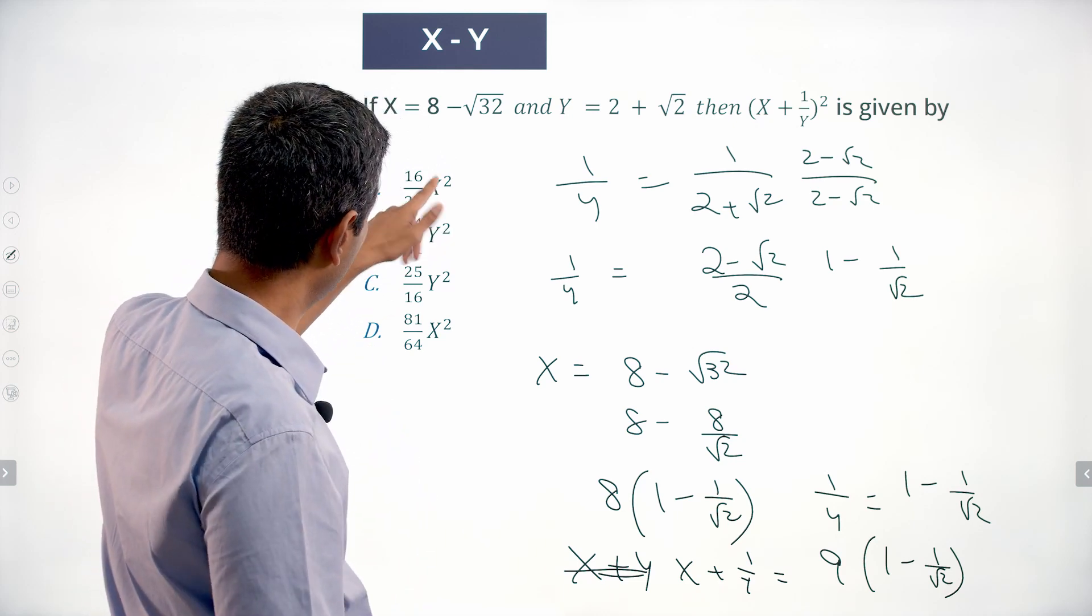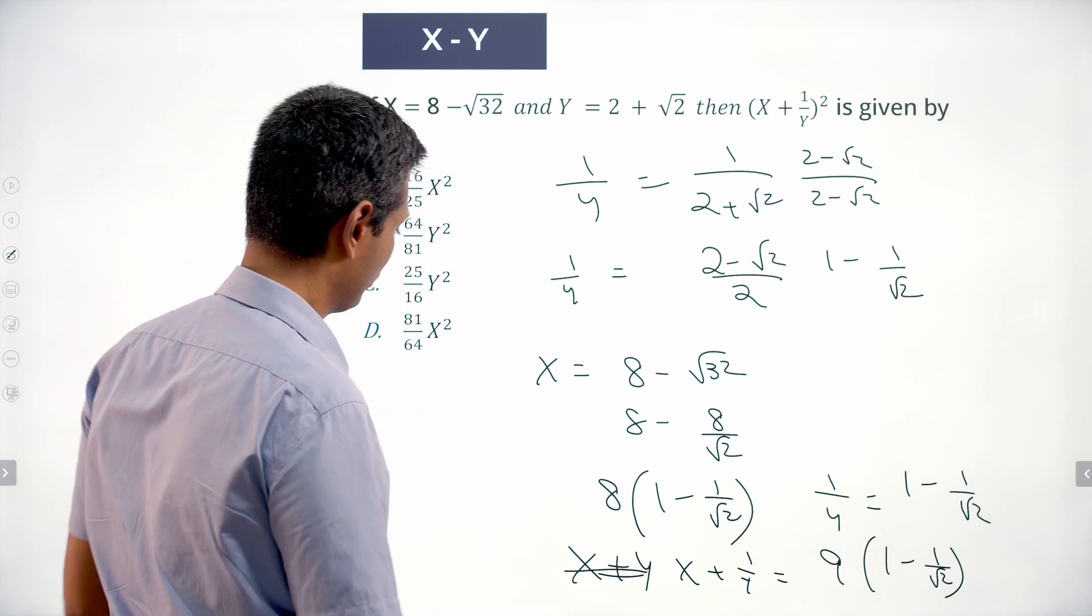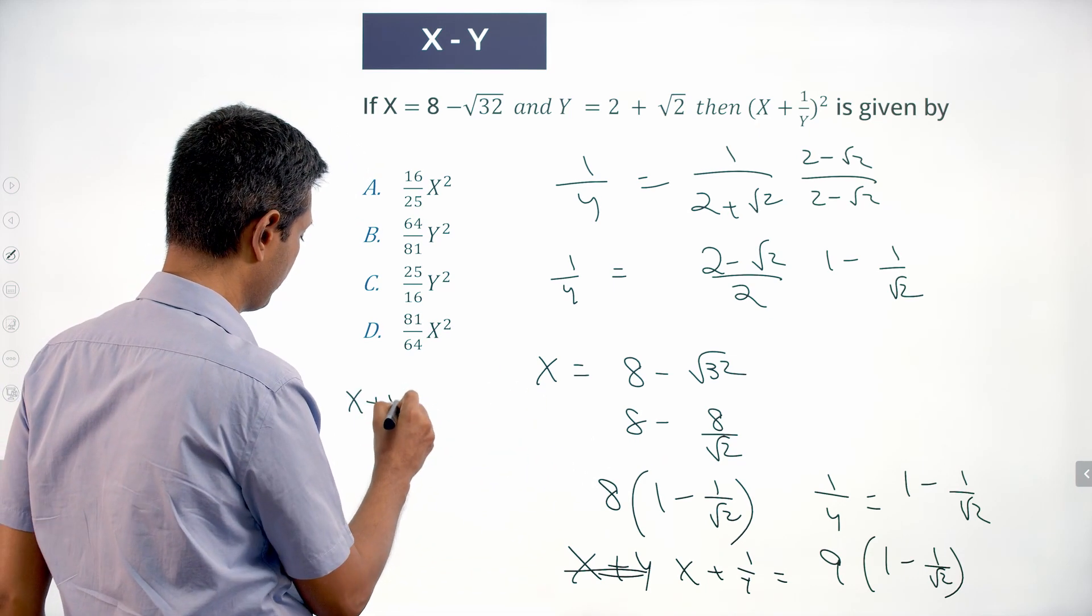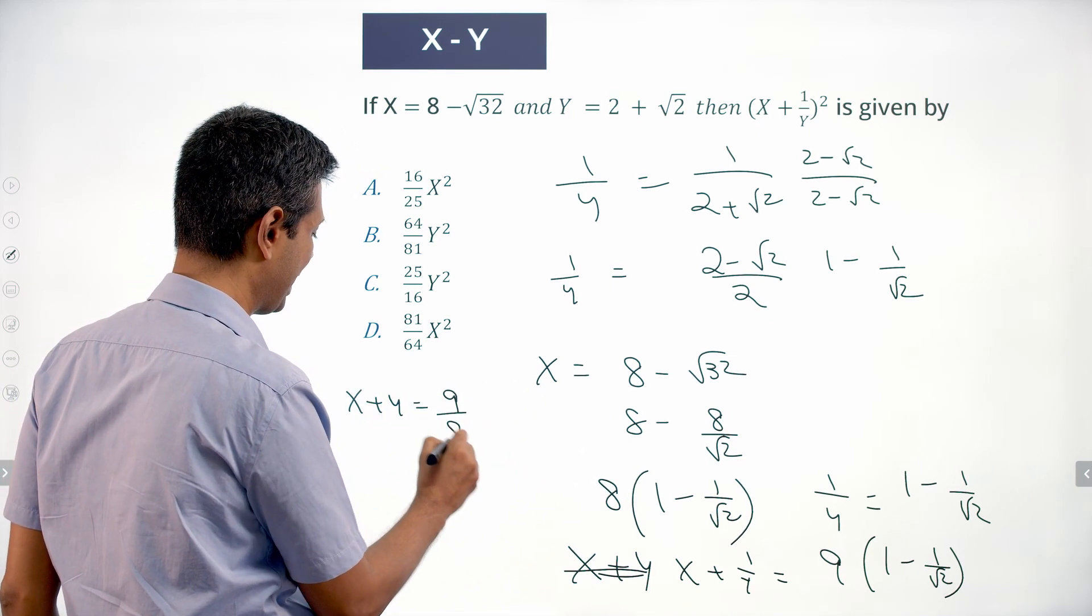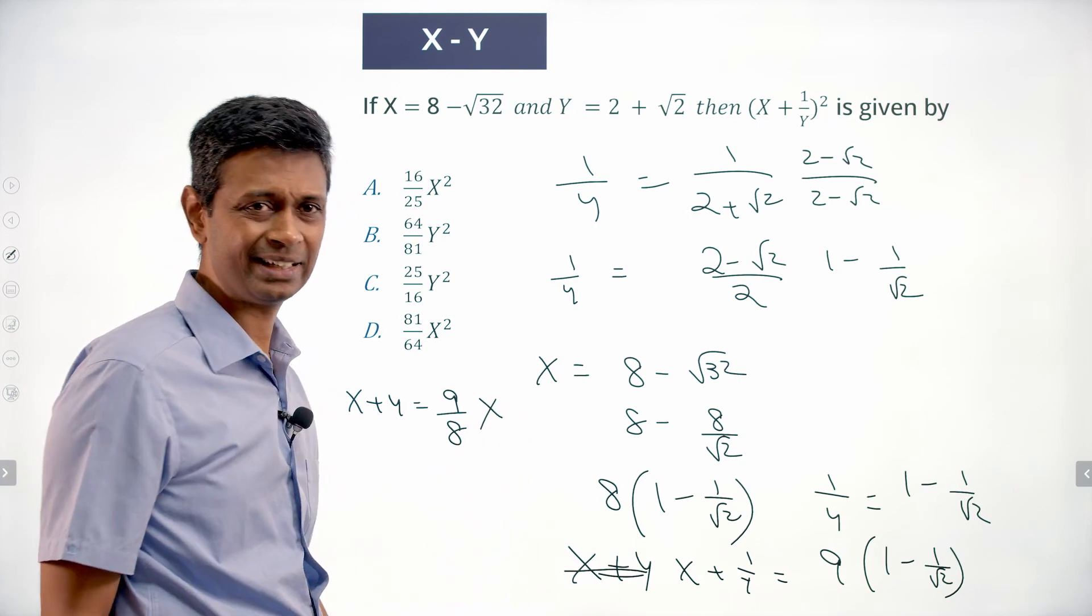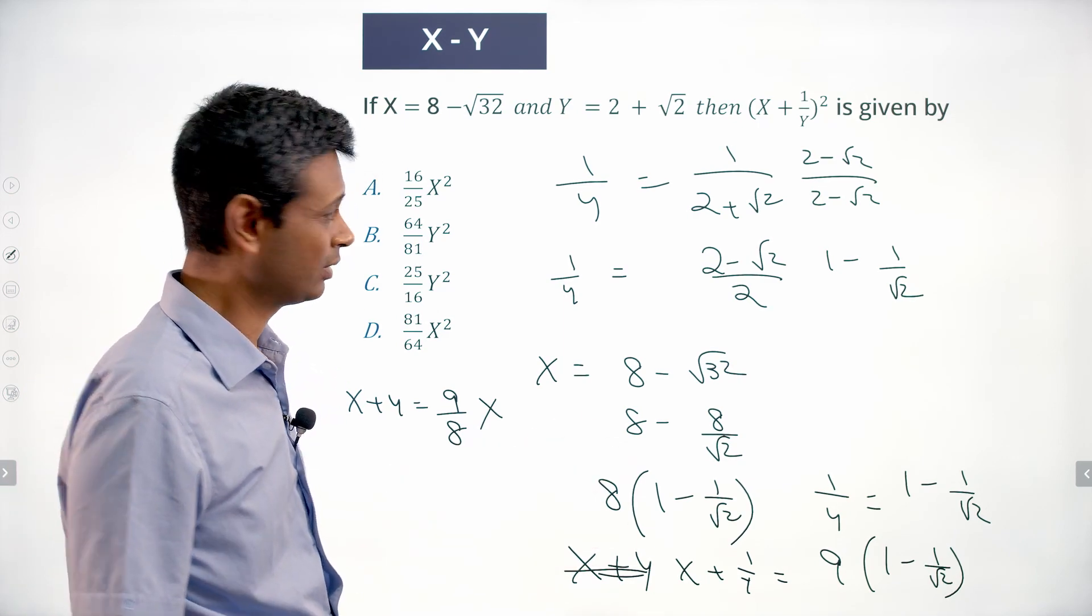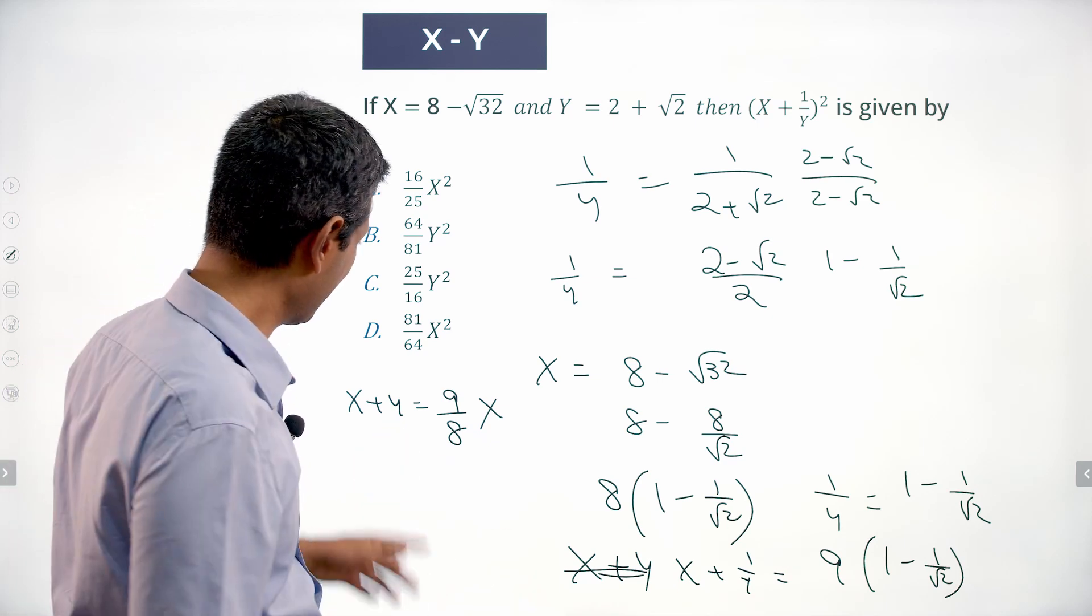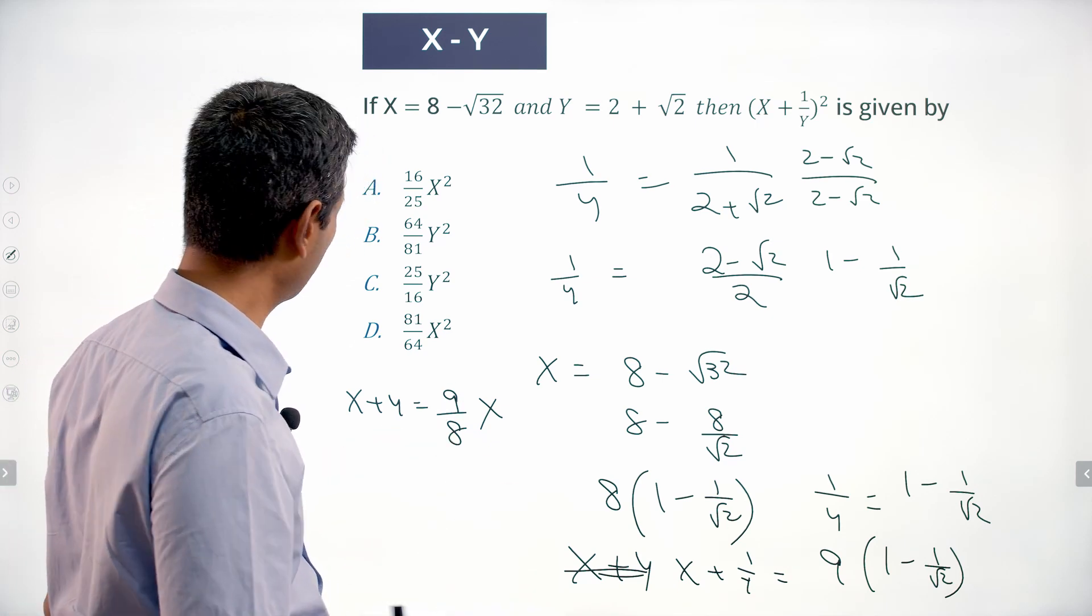So we want the answer in terms of either x or y. So it is 9 by 8 times... x plus 1 by y is 9 by 8 times x, or 9 times 1 by y. It is in terms of 1 by y.